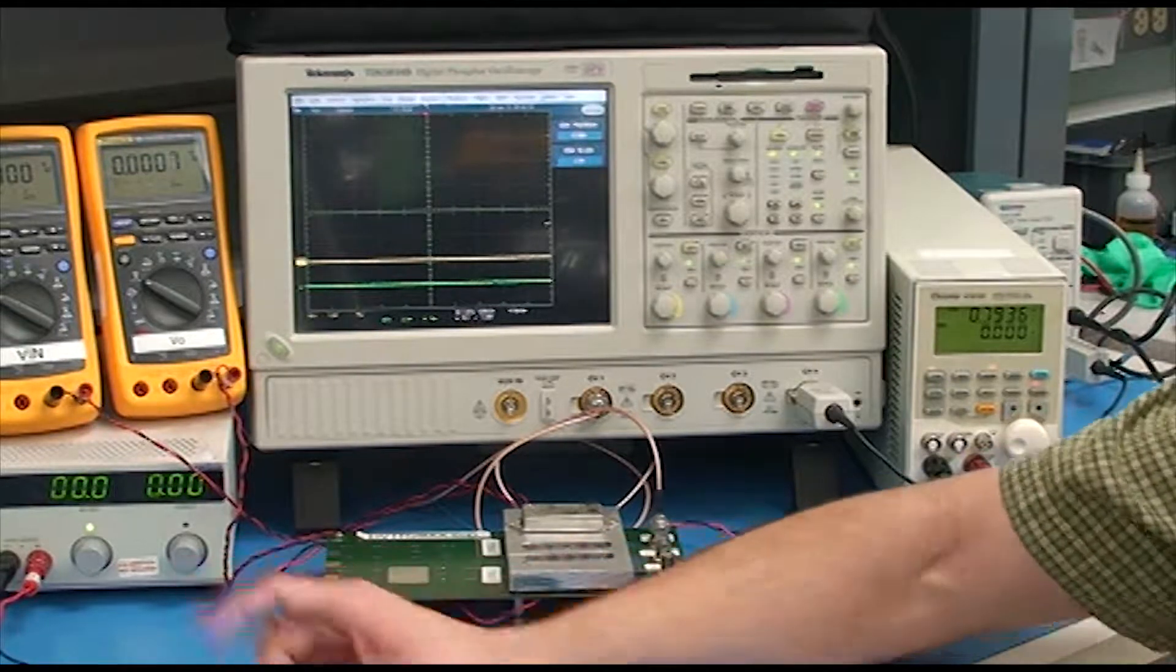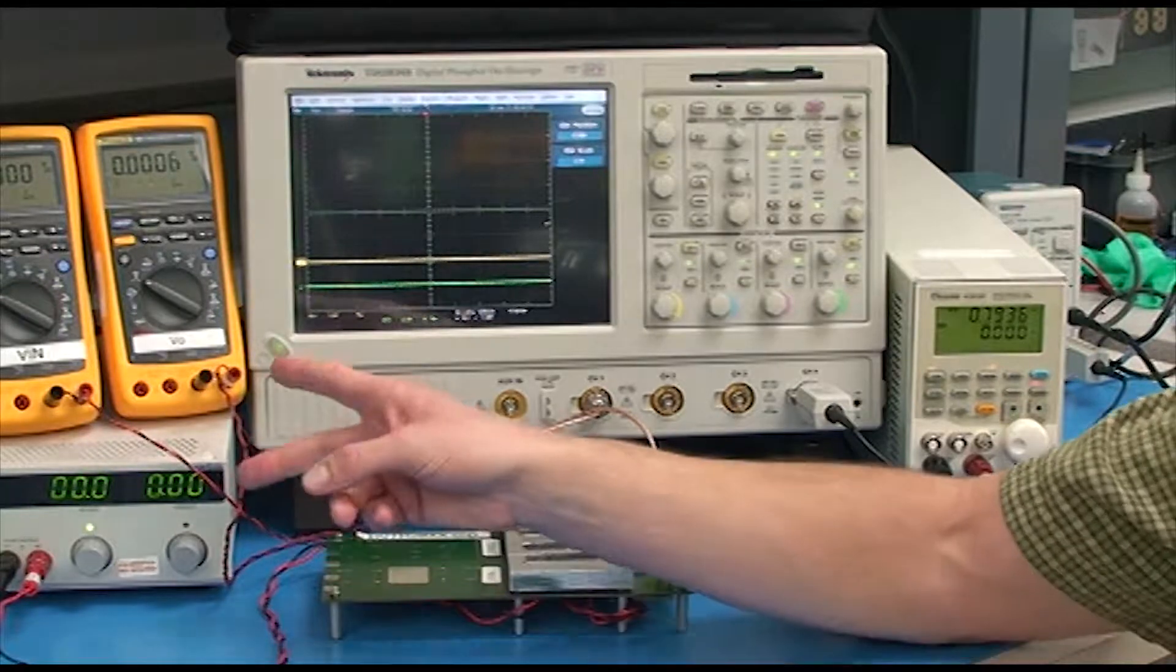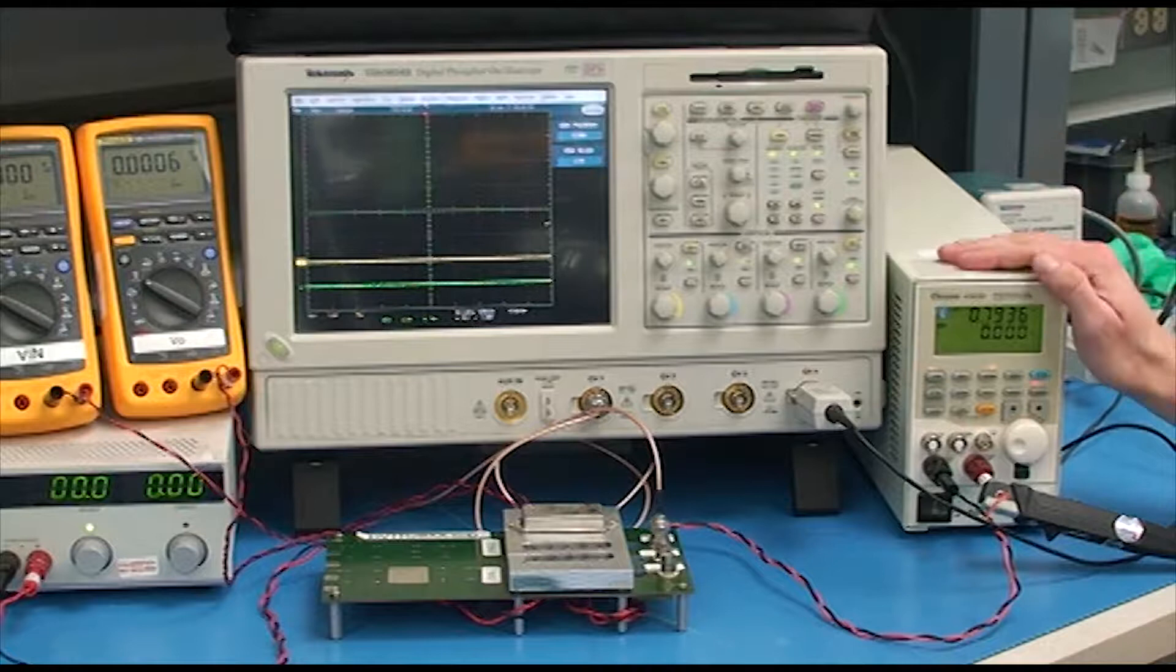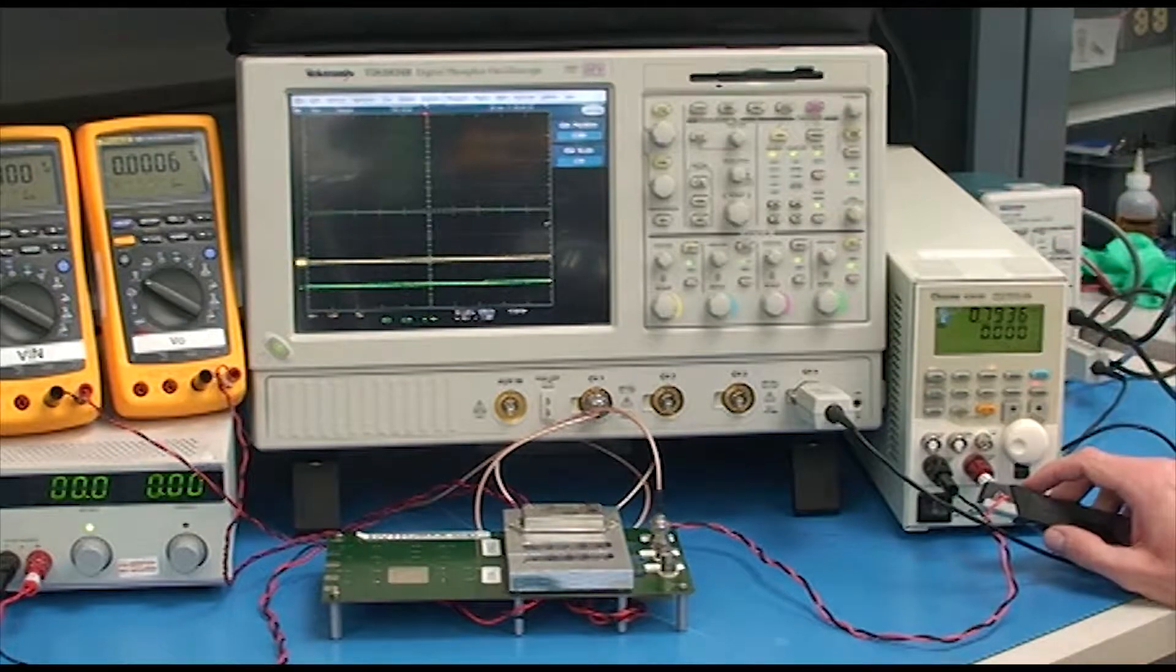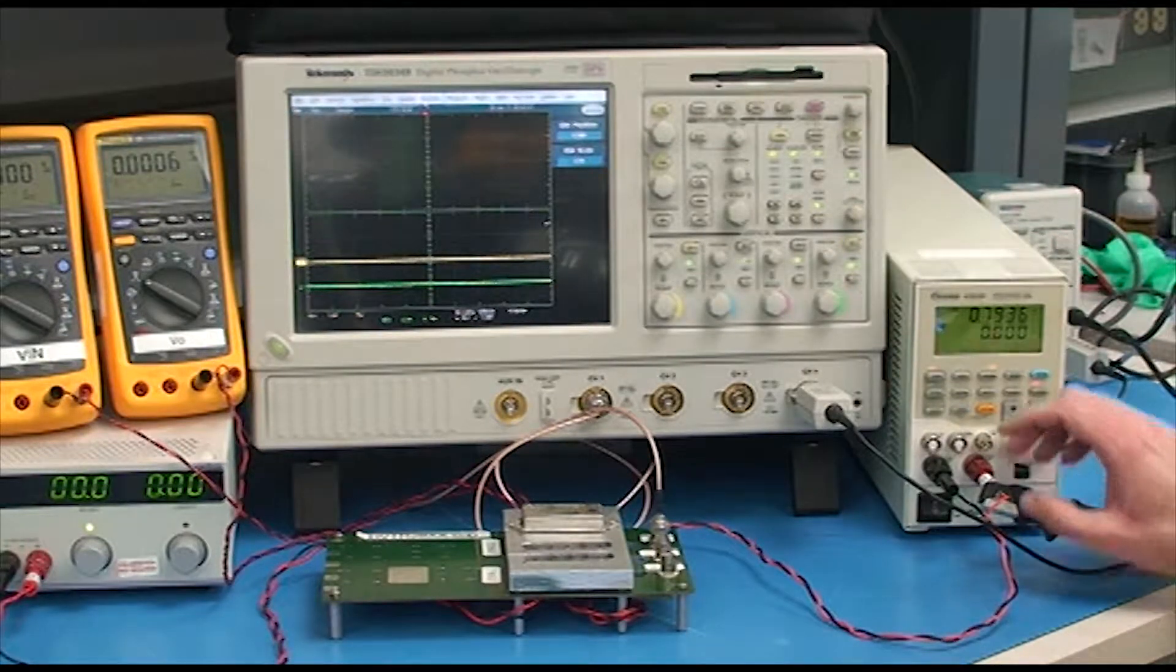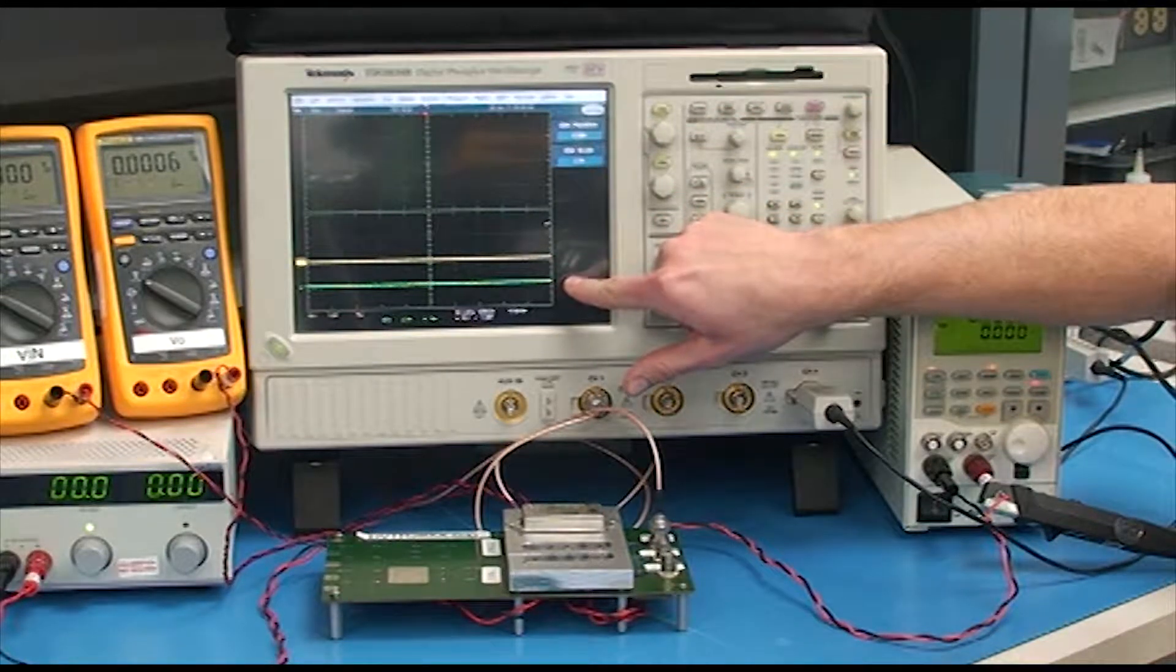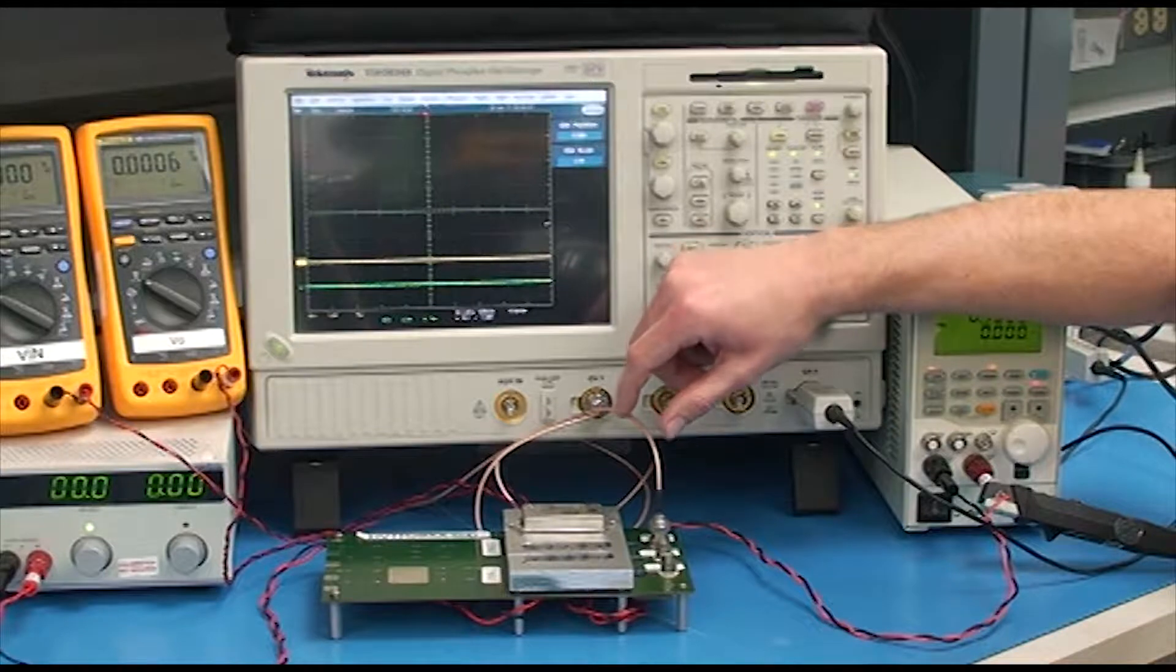We have a setup with a standard benchtop power supply, meters that are measuring V out and V in, and an electronic load at which we measure the output current that's displayed on the oscilloscope. The green is the output current. The yellow is the output voltage.